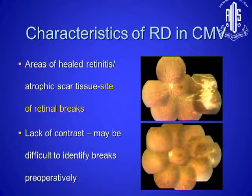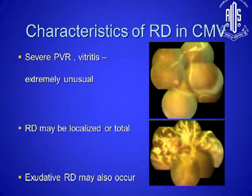The difficult part of identifying the break in CMV retinitis is that there's no contrast. You just see these dark areas, and in any of these dark areas there could be a break. Then slowly you see a retinal detachment developing. The retinal detachment will be localized or total, but the earlier you see it, the better the prognosis for the patient.